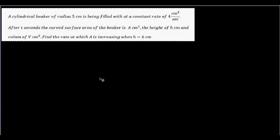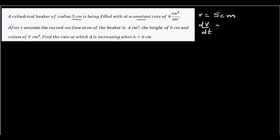I got this question from one of my students. This is an excellence question at NCA level 3 on related rate of change. The question says a cylindrical beaker of radius 5 cm is being filled at a constant rate of 4 cm³ per second. So the radius is constant at 5 cm, and dV/dt is given to be 4 cm³ per second.